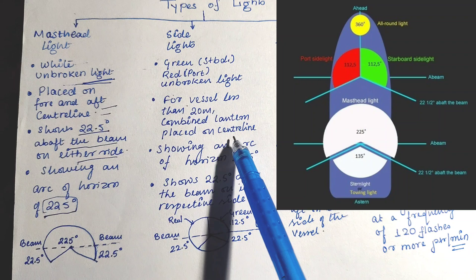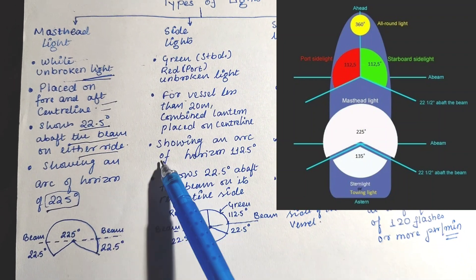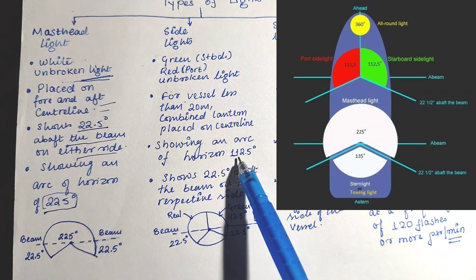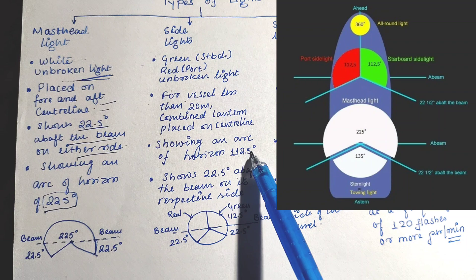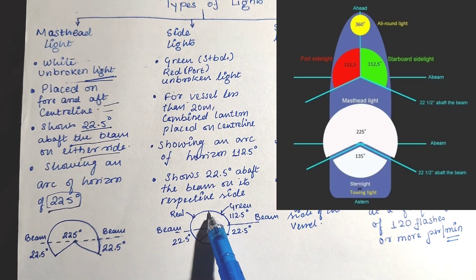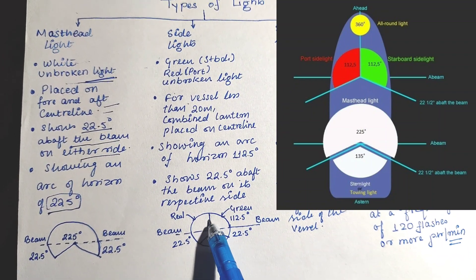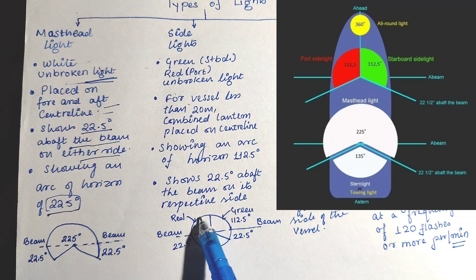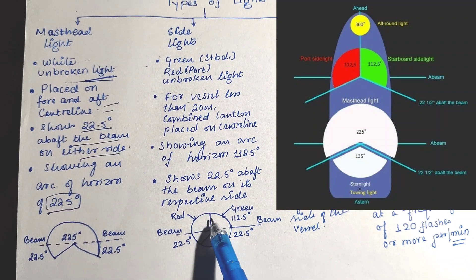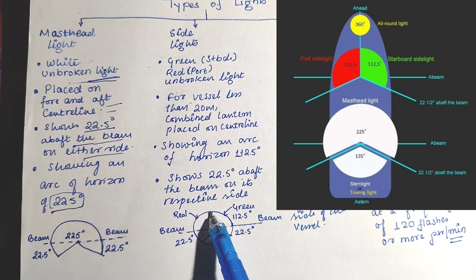Green on the starboard side and red on the port side. This is 112.5 degrees, and above the beam it is 22.5 degrees.